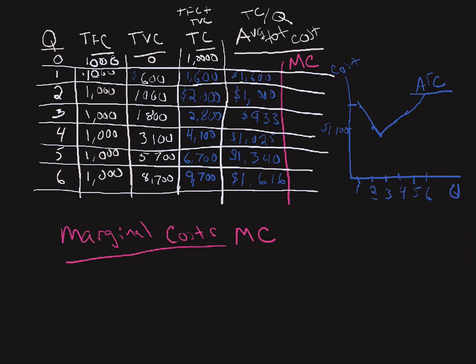As we go from zero output level to one, how much does it cost to produce this extra unit? If we go to total cost, we can see it used to cost a thousand dollars to produce zero units. Now it costs sixteen hundred dollars, so our marginal cost is six hundred dollars.